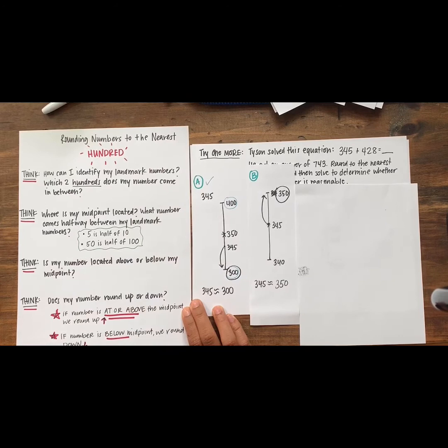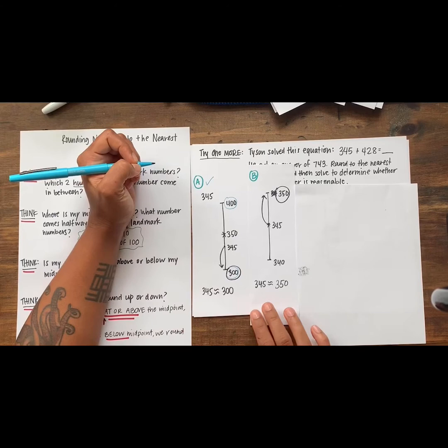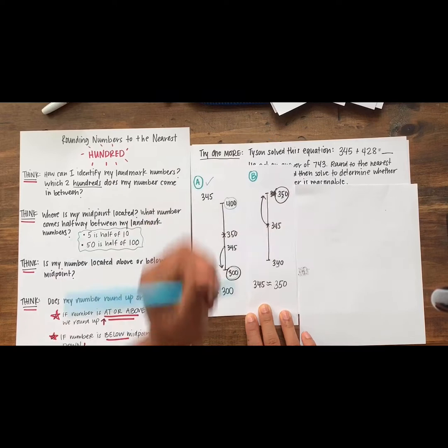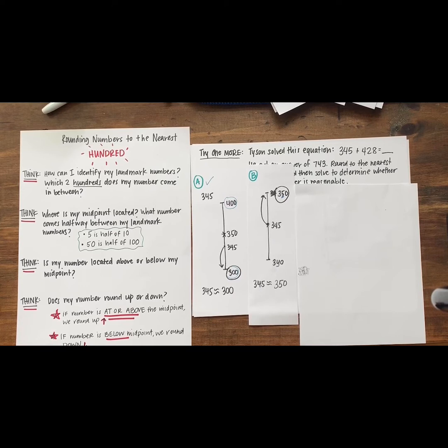What mistake did student B make? Say it out loud. That's exactly right. Student B identified the two multiples of 10 the number 345 was in between, but this problem asks us to round to the nearest hundred.